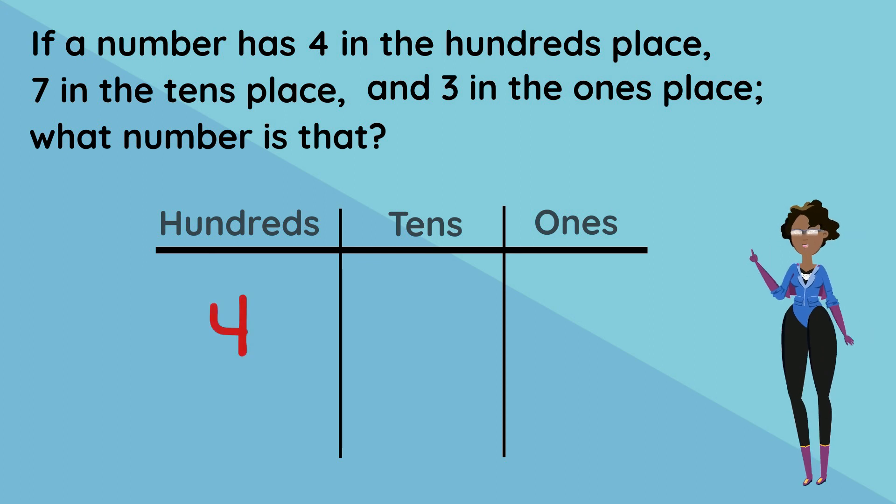So we have four in the hundreds place, seven in the tens place, and three in the ones place. Wow! That gives us the number 473!